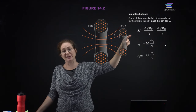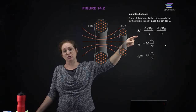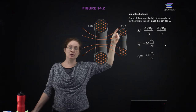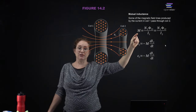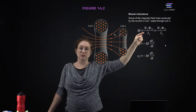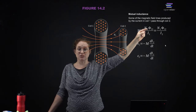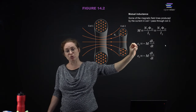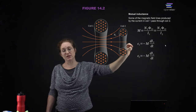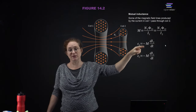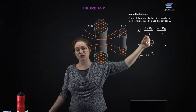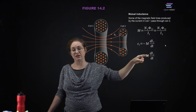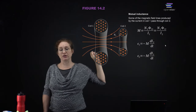The mutual inductance, if you have several turns of wire, is equal to the number of turns in the second coil times the flux in the second coil divided by the current in the first coil. The induced potential in coil one is equal to negative the inductance times the changing current in coil two, and the induced potential in coil two is equal to negative the inductance times the time derivative of the current in coil one.